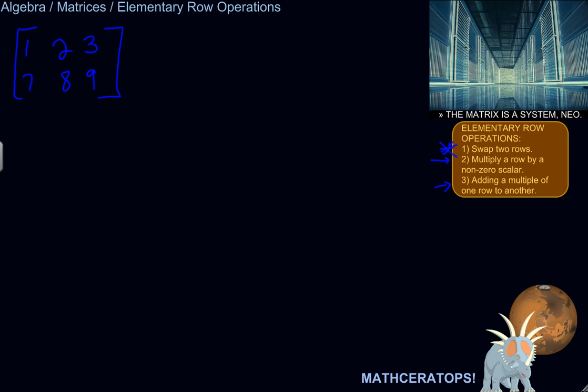So you can swap two rows. So it would be valid to transform my matrix like this and say I'm going to put row 1 here, I'm going to put row 2 here. And arrows like that, that's pretty clear what that means. So I've just swapped two rows.